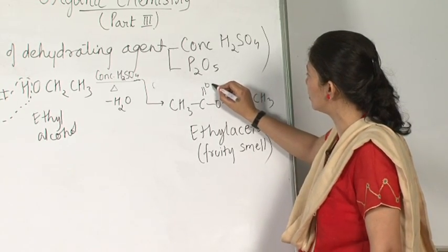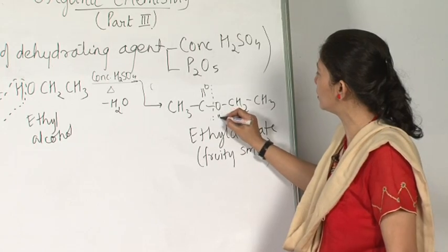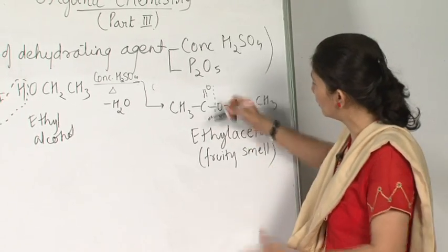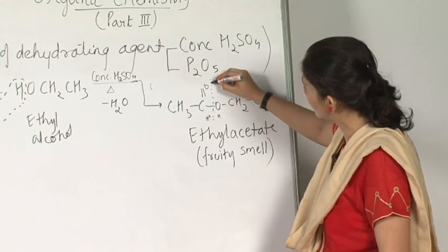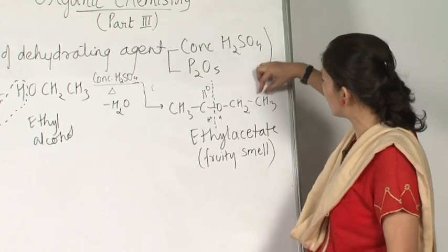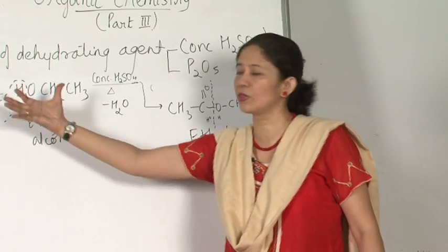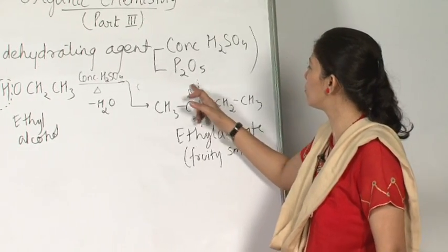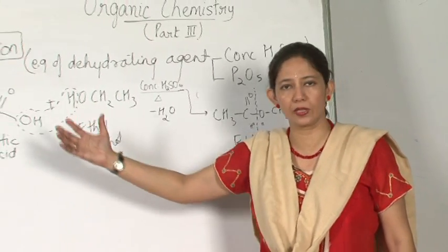Just look here. The water part — H on this side and OH on this side — this bond is going to break. The CH3CH2OH part is going to come back. Similarly, CH3 C double bond OH — this part is going to come back. The reverse reaction restores the original carboxylic acid and alcohol.